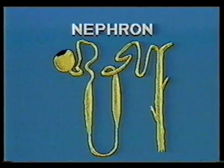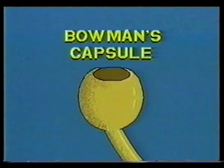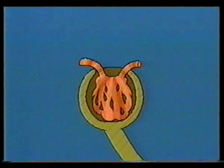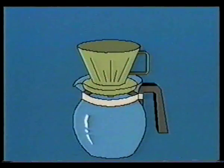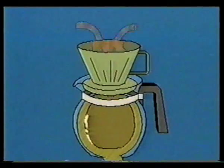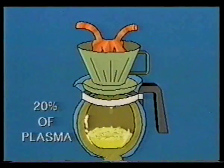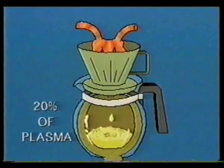The head of each nephron forms a cup called a Bowman's capsule. Into this, a knot of capillaries transports blood. A Bowman's capsule functions as a crude filter. Some 20% of the blood plasma, consisting of water and the many chemicals within it, is forced by blood pressure into the kidney tubule.